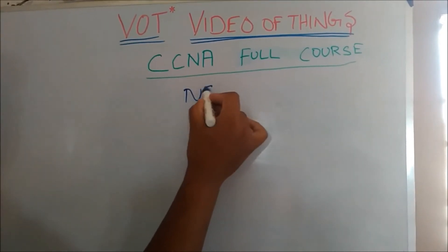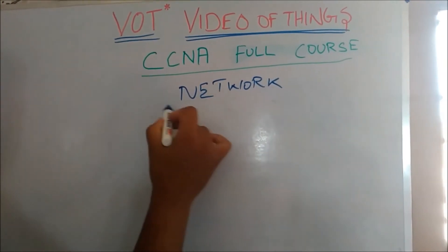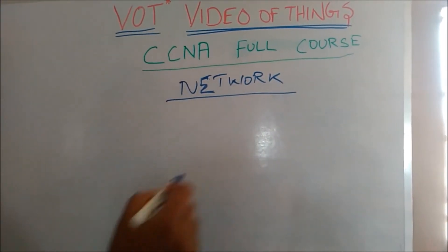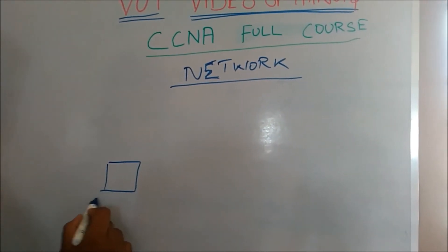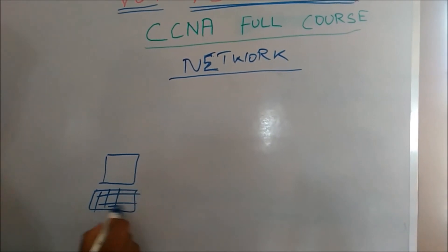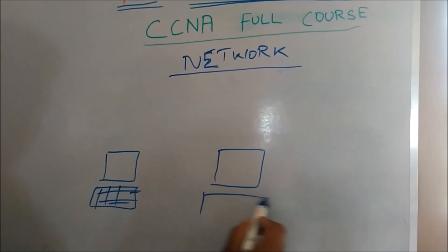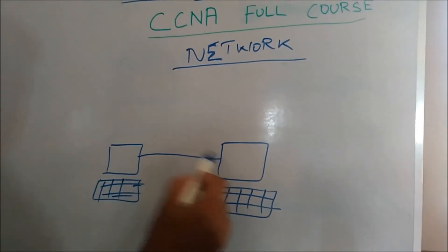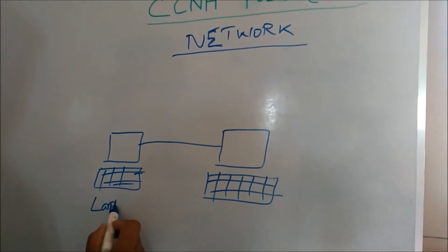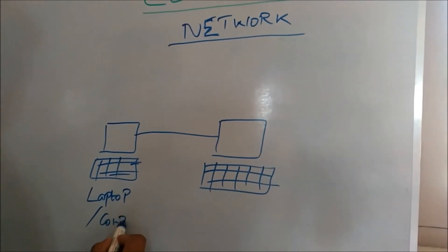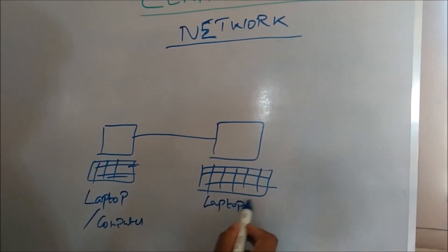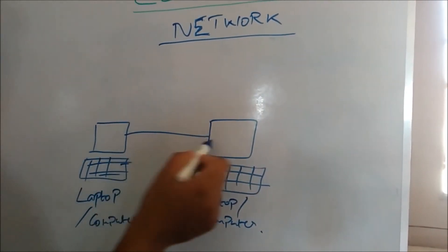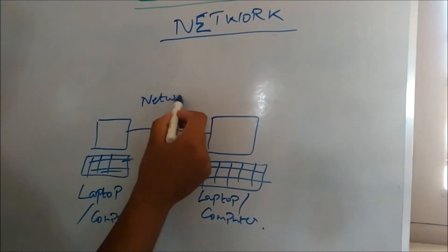Let's talk about the network. Network is a term. I can explain it. Network is not a one. For example, this is a laptop or computer. If you want to connect two things, then the connection is where the network is connected.